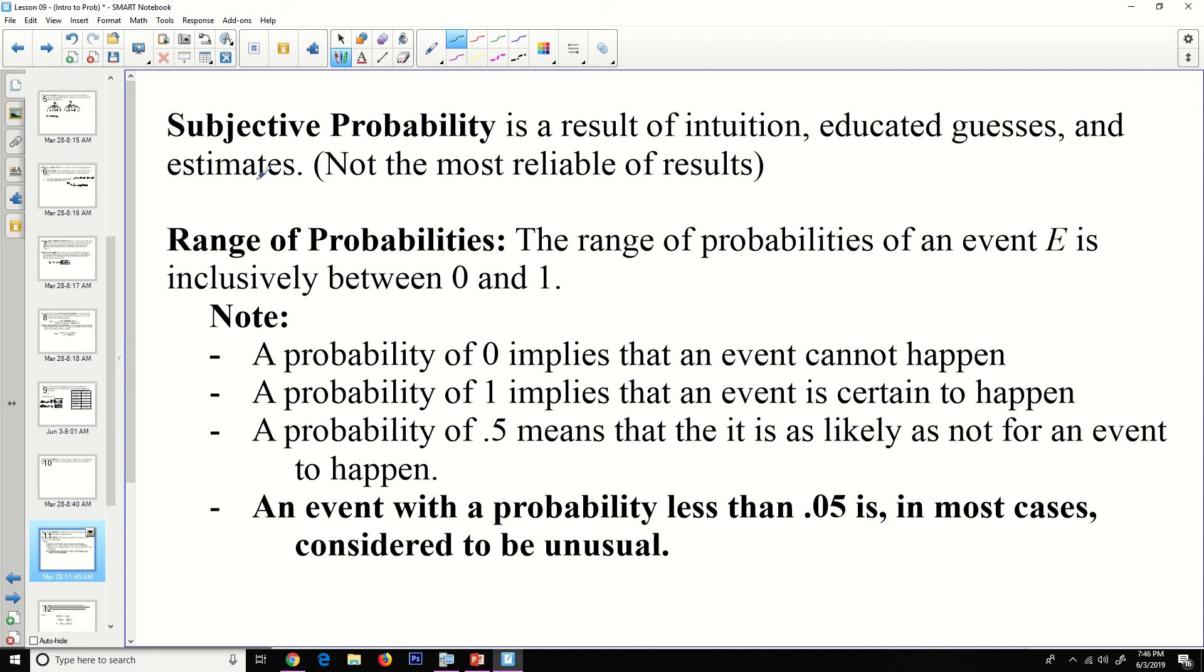The range of probabilities of event E is inclusively between one and zero, or if it's given to you as a percentage between zero and a hundred percent. A probability of zero implies that the event cannot happen. A probability of one implies that the event is certain to happen. A probability of 0.5 means that it is as likely as not for the event to happen. An event with a probability of less than 0.05 is in most cases considered to be an unusual event.